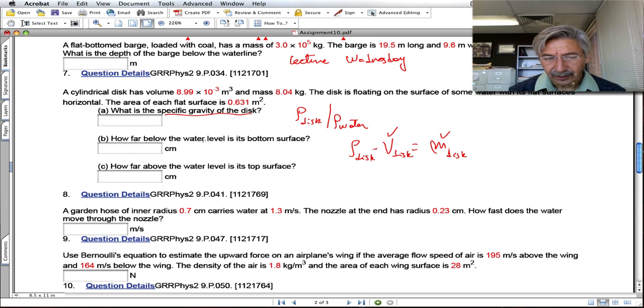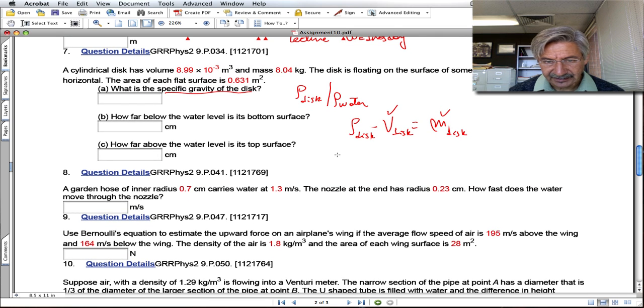How far below the water level is its bottom surface? It's very similar to the problem before. If this is the cylinder and this is the level of the water, then if this distance is x and this area is A...